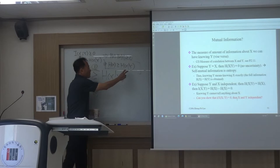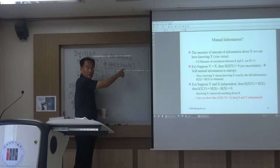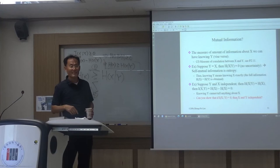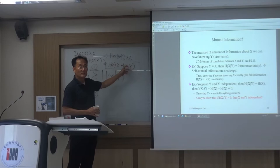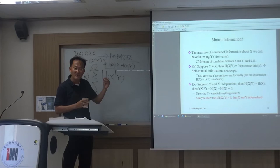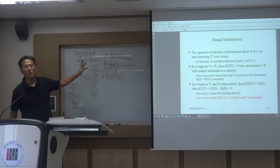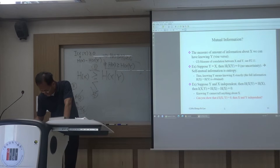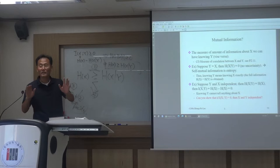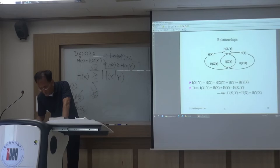If knowing Y has something to do with X — just like our homework problem where U equals theta plus some noise random variable E1 — knowing U can tell something about theta. When the noise is very small, it tells you very much; when noise is very large, very little. This is very important, and it gets even more interesting when we get to the channel coding theorem — really exciting and interesting problems.